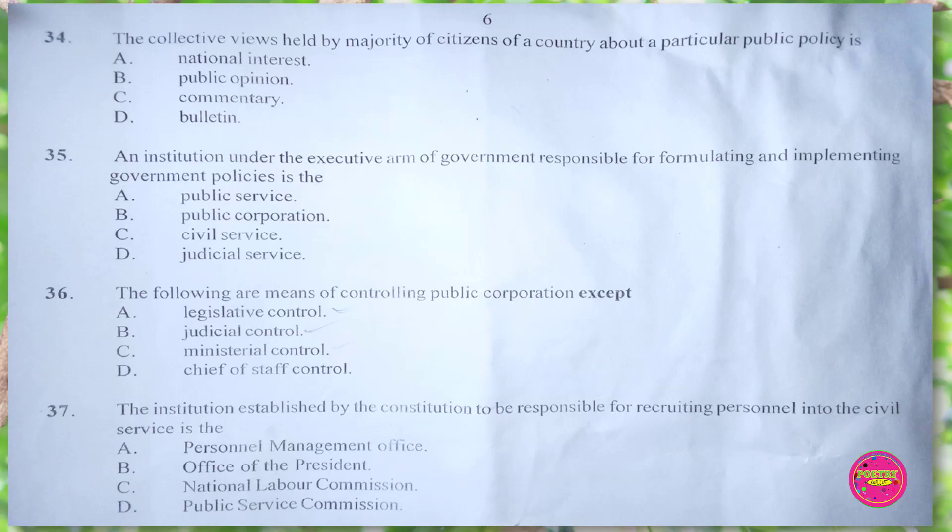Question 35. An institution under the executive arm of government responsible for formulating and implementing government policies is the: A. public service, B. public corporation, C. civil service, D. judicial service. The correct answer is C. civil service.